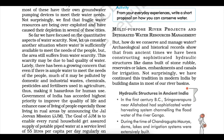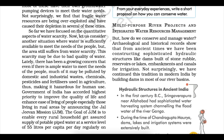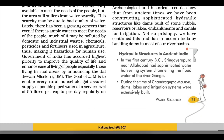But how do we conserve and manage water? Archaeological and historical records show that from ancient times we have been constructing sophisticated hydraulic structures — dams built of stone rubble, reservoirs or lakes, embankments and canals for irrigation. We have continued this tradition in modern India by building dams in most of our river basins.